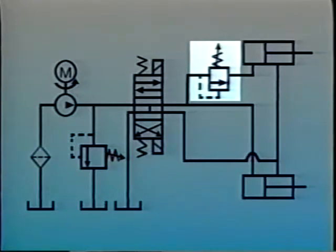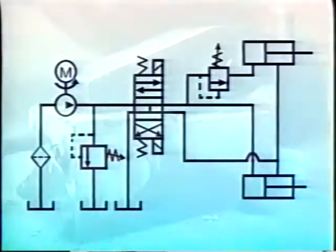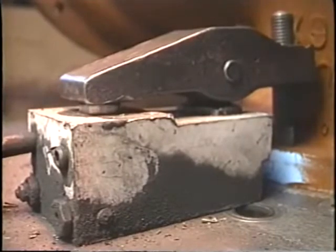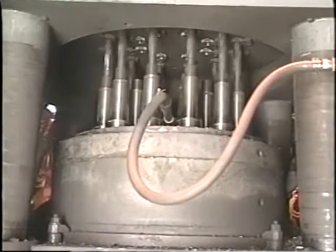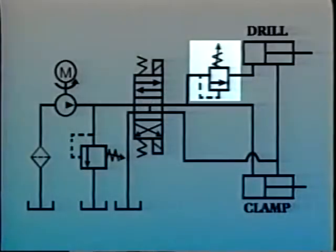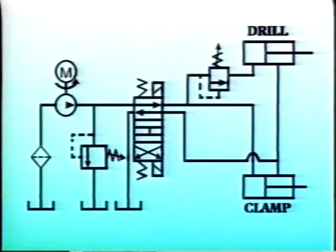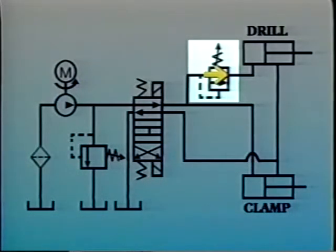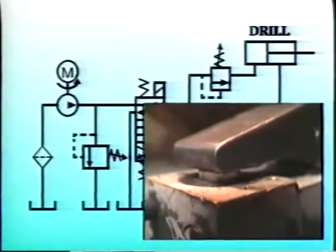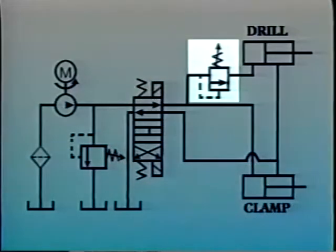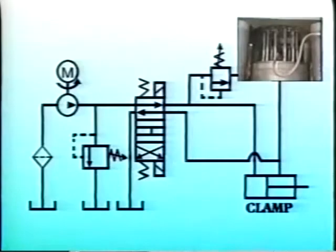Normally non-passing pressure control valves can also be used as sequence valves to make sure one operation occurs before another. For example, a drilling operation involves clamping a workpiece with one cylinder, then feeding a spinning drill bit into the work with another cylinder. The sequence valve installed ahead of the drilling cylinder stops the flow because the pressure isn't high enough to overcome the force of the spring. Once the clamping cylinder reaches the end of its stroke, system pressure rises, eventually overcoming the force of the spring in the sequence valve, and fluid flows to the cylinder that moves the drill bit into the workpiece.